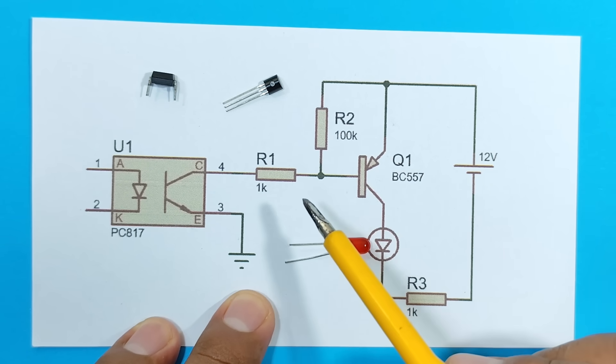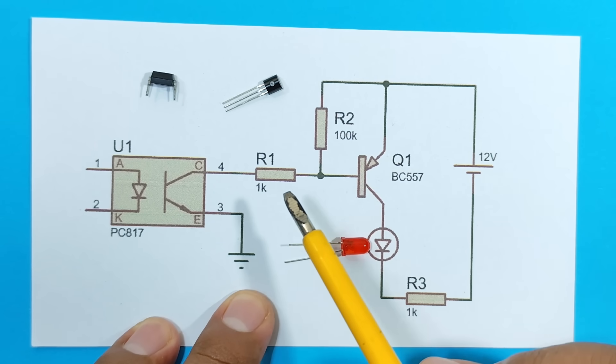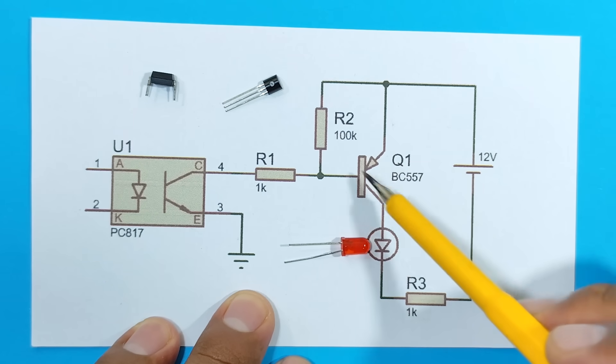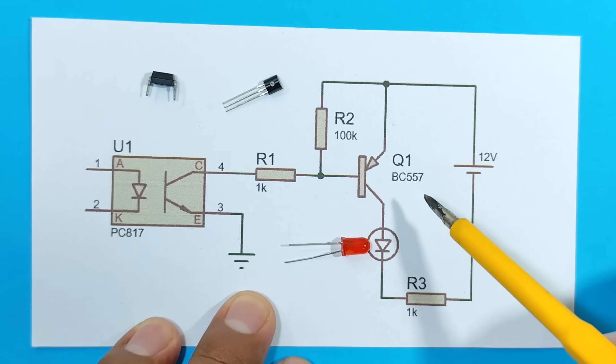Therefore, we need a way to increase that current. And how do we do that? By using a PNP transistor. In this case, we are using the BC557. However, you can use any other PNP transistor.